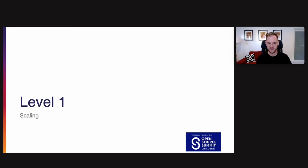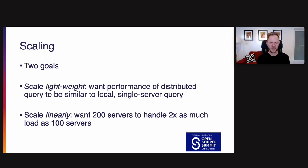So next, let's move on to level one, scaling. Talking about how we scale out these individual servers into a cluster and issues we may run into along the way. So with scaling, we have two goals. The first is we want scaling to be lightweight. We want performance of distributed queries to be similar to local queries on a single server. The idea is that when we're going from one server to two, so let's say maybe you're splitting up a single server. You're splitting up a 64 core machine into a 32 core machine. When we go from one server to two, we don't want performance to be very different. The second is we want to scale linearly. So we want 200 servers to handle two times as much load as 100 servers if they're all the same kind of server.